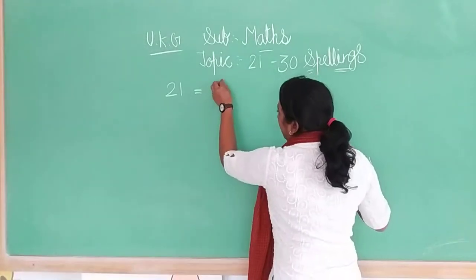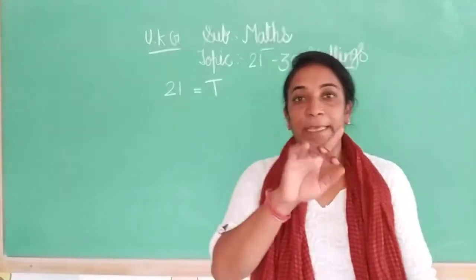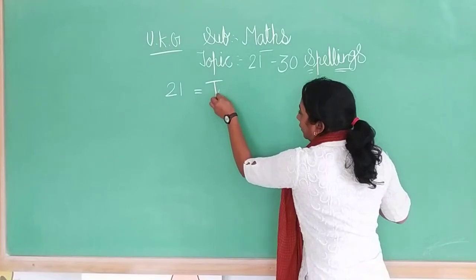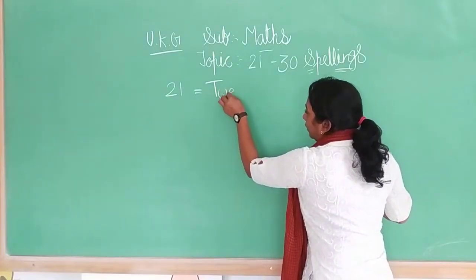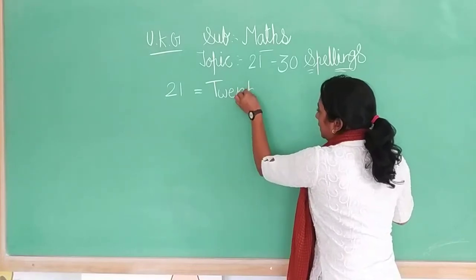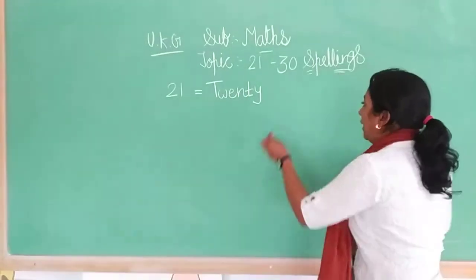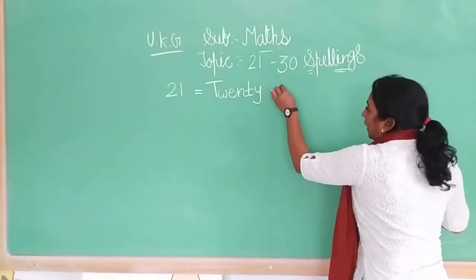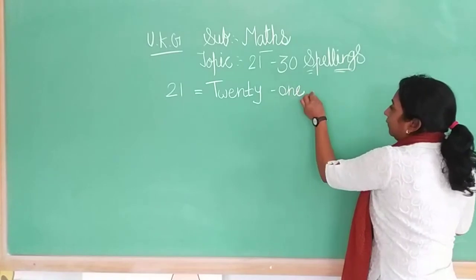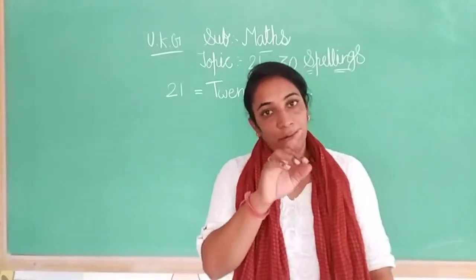Then we write the first letter of 21. T is capital. Twenty: T, W, E, N, T, Y. Then 1 — one: O, N, E. Twenty-one. Full stop. 21.